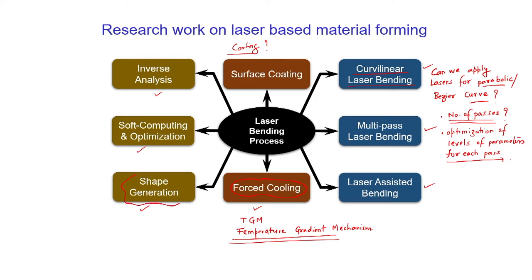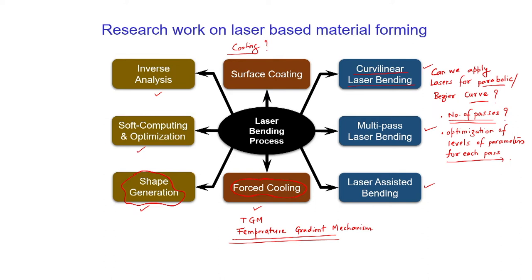Shape generation is another area — going beyond simple linear heating to generate complex 3D shapes like a saddle shape by determining optimal irradiation patterns and parameters. Optimization is also critical because laser-based manufacturing is expensive and efficiency is low — a large amount of energy must be pumped to deliver the required laser beam. Soft computing methods such as genetic algorithms or simulated annealing help solve these optimization problems.